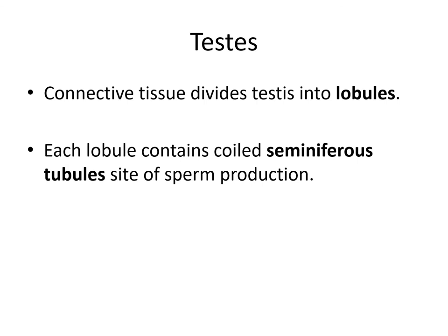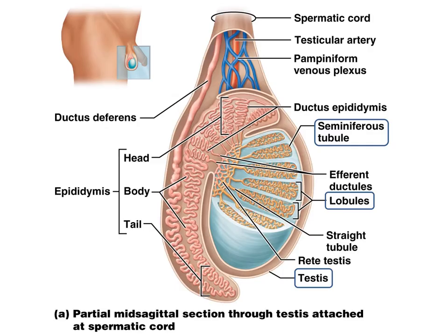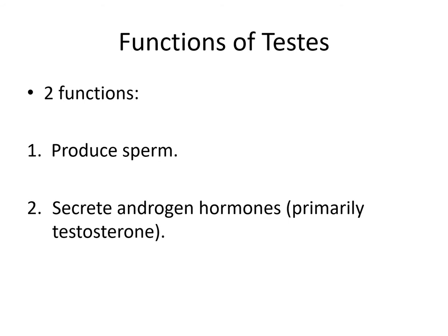Connective tissue divides the testes into different lobules, and each lobule contains the coiled seminiferous tubules — this is the site for sperm production. You can see that in the testes, these coiled tubes of the seminiferous tubules are separated out in the different lobules. The testes have two functions: the first is to produce sperm, and the second is to produce androgen hormones, primarily testosterone, which help regulate sperm production and also the male sexual characteristics.